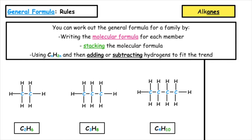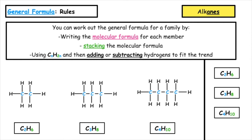We then stack the molecular formulas in order of increasing carbon chain length, and start with our general formula as CnH2n. We have to either add or subtract hydrogens to fit the trend. For C2H6: 2 times 2 is 4, and I add 2 to get 6. For C3H8: 3 times 2 is 6, add 2 to get 8. For C4H10: 4 times 2 is 8, add 2 to get 10. So the general formula for the alkanes is CnH2n+2.